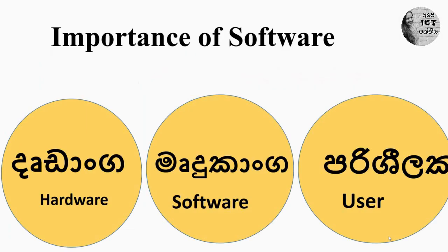Let's move to today's lesson. Today we are going to learn about the importance of software. When we consider a computer system, there are mainly three parts: hardware, software, and user. There are three parts in the computer system — hardware, software, and user. Let's learn about what is hardware, what is software, and what is the user.